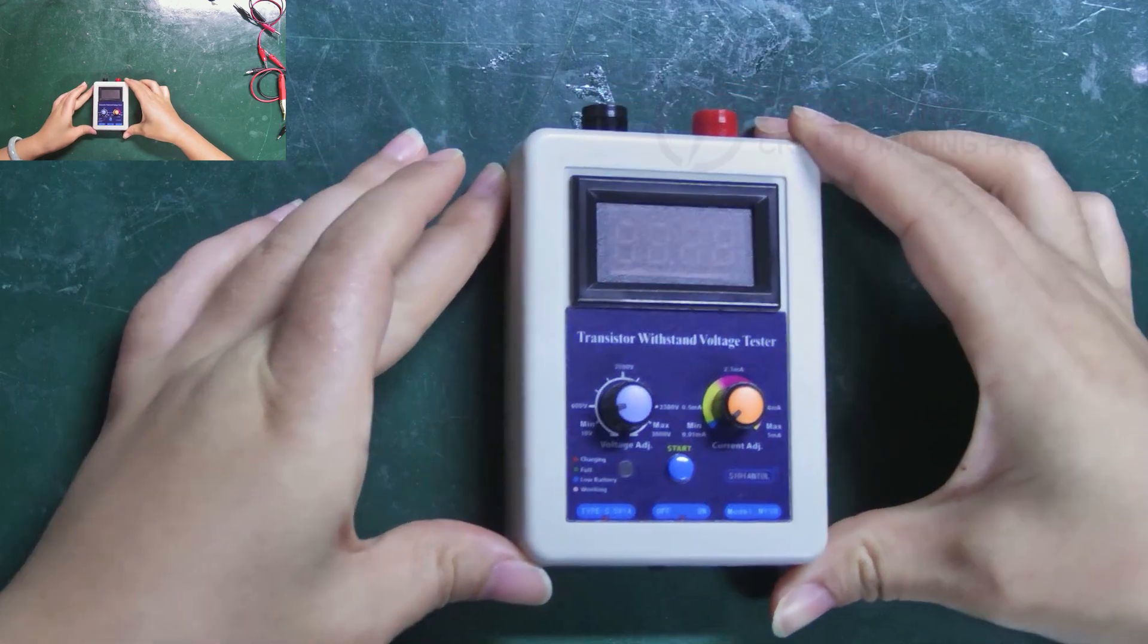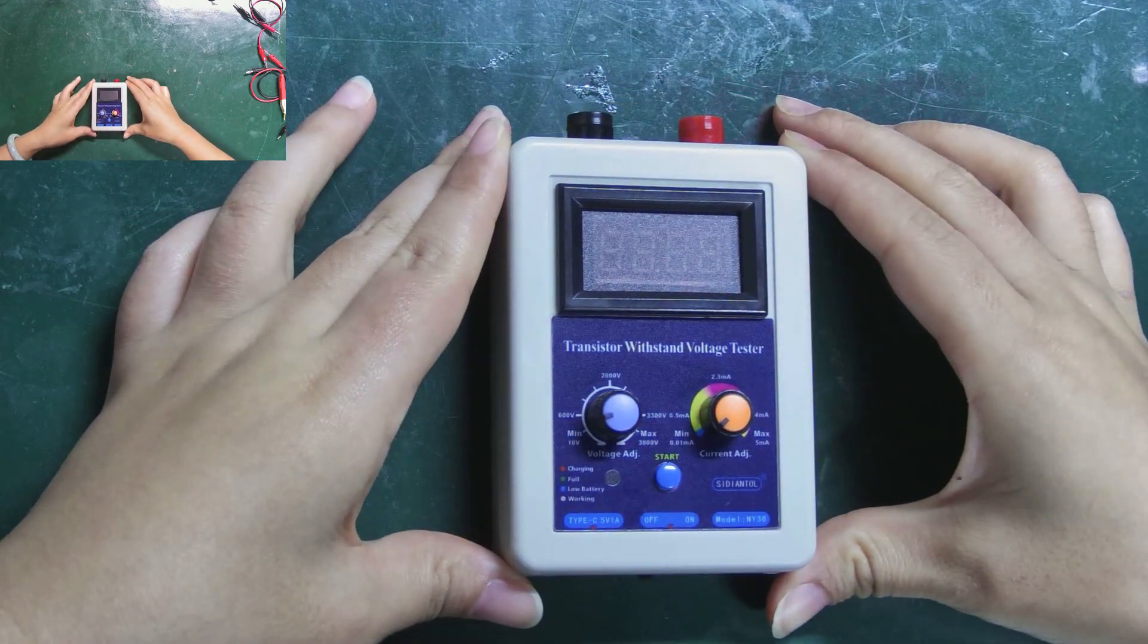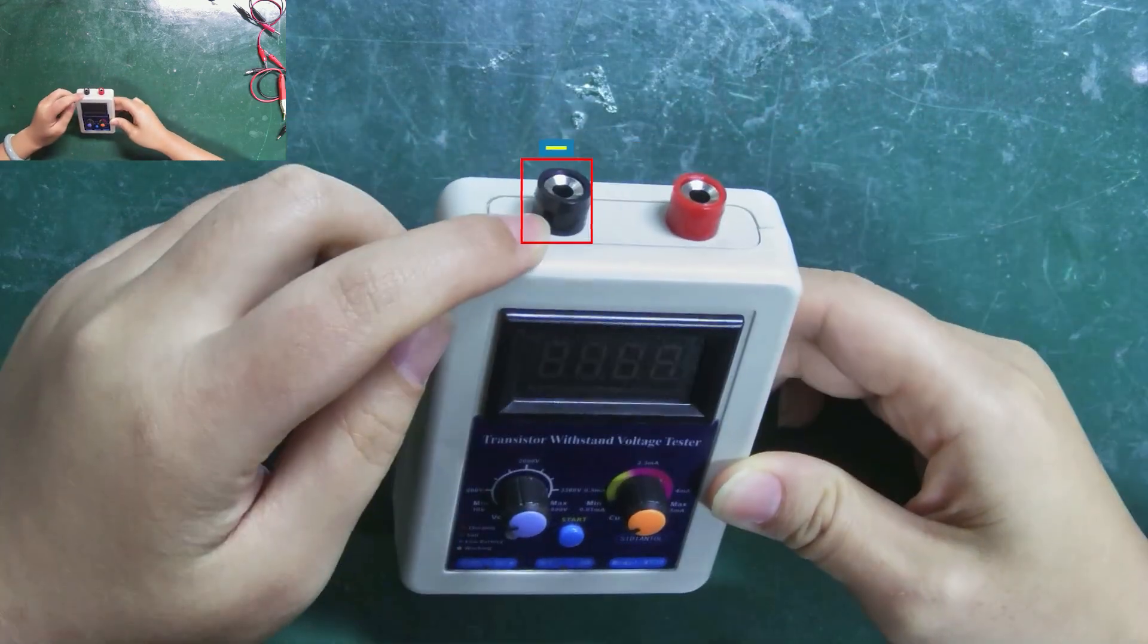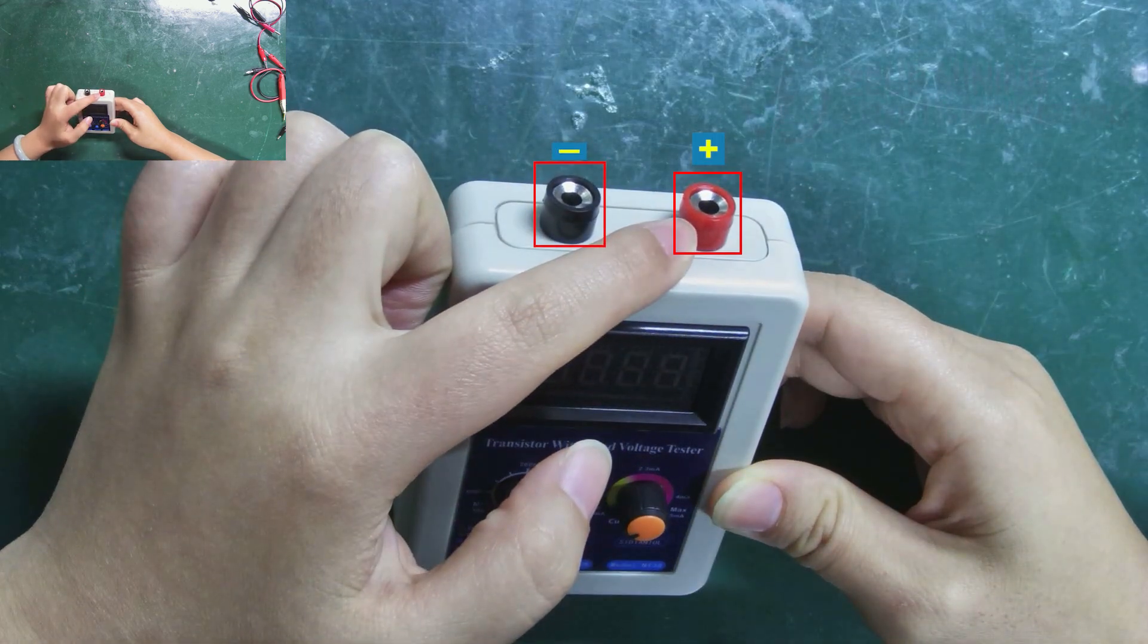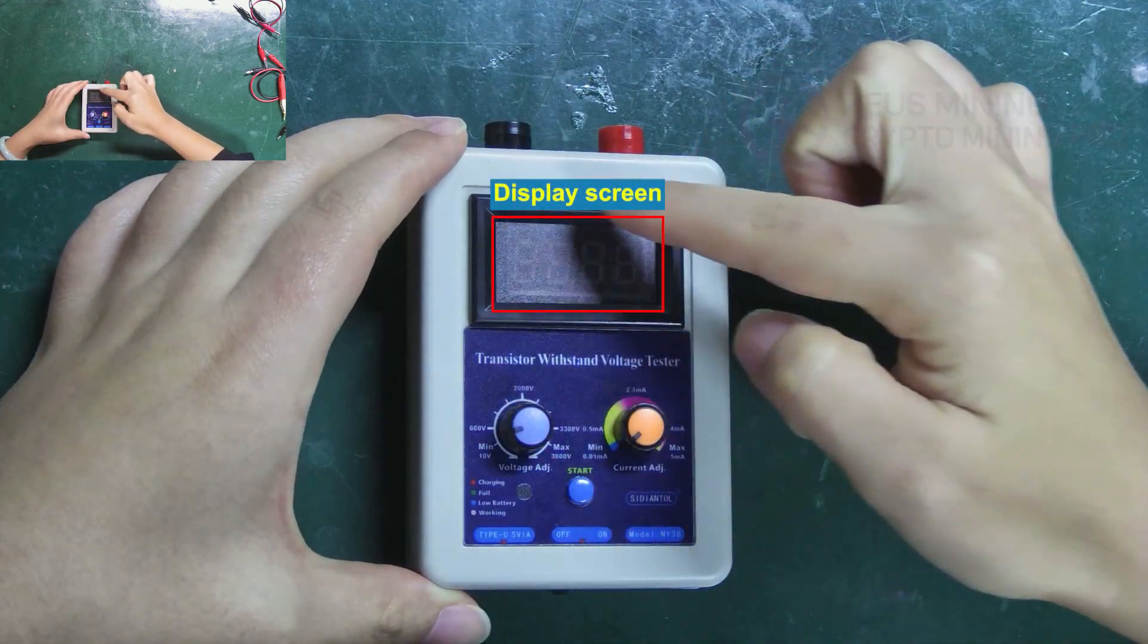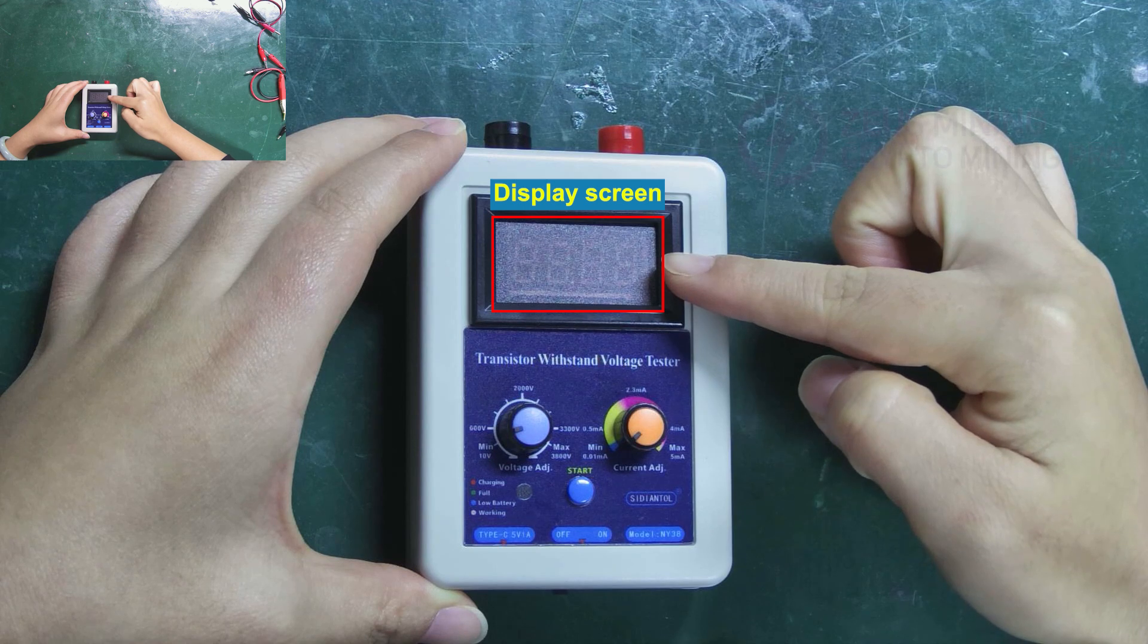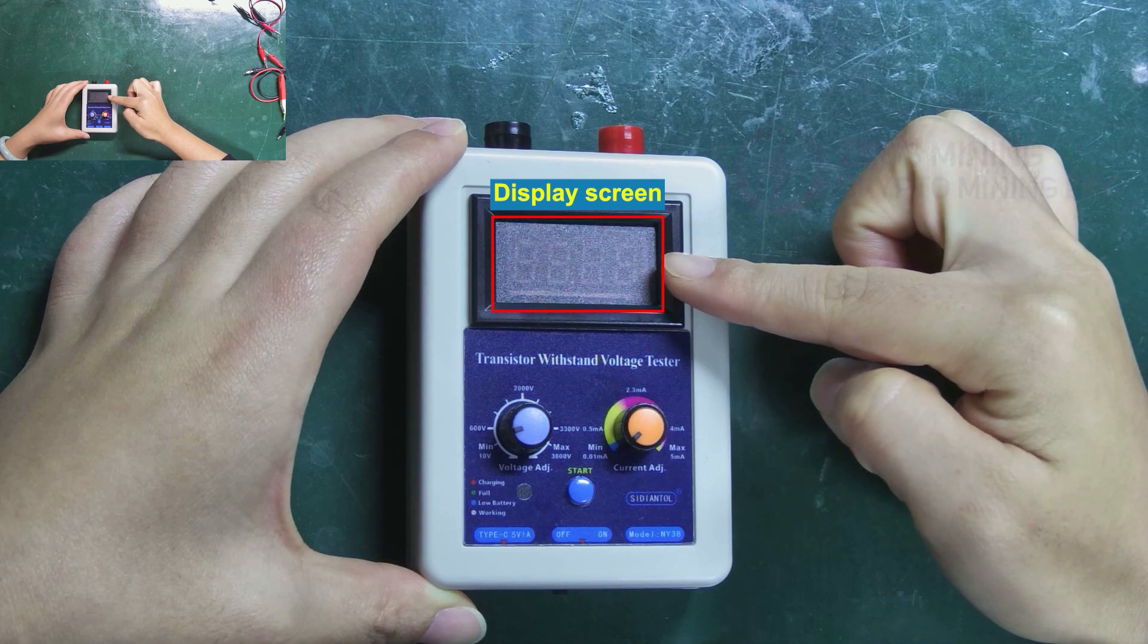Now, let me explain its function buttons in detail. The black one is the negative output and the red one is the positive output. Here is the display screen, which shows the withstand voltage value of the component being tested.